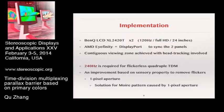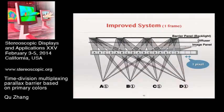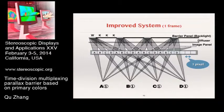So we proposed an improvement called one-pixel aperture based on sensory properties to remove flickers. You may refer to our last paper for the details of this method. Here is the structure of the improved system. You may see some adjustments, like the order of the panels, and we also insert a diffuser. The main concept of the proposed method has been kept. Since this barrier type uses a barrier pattern like white, black, black, black, we call this barrier type WKKK. With this WKKK system, high-quality autostereoscopy has been achieved.